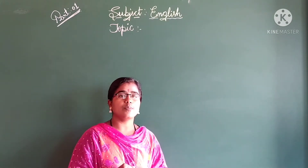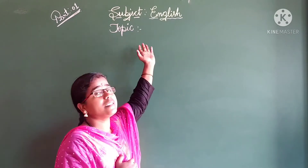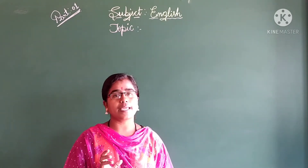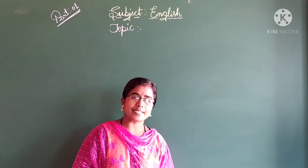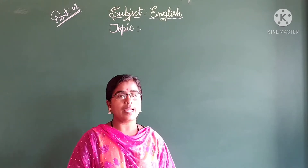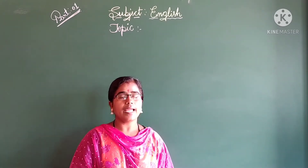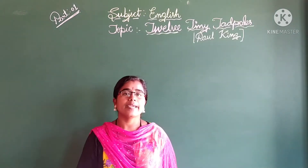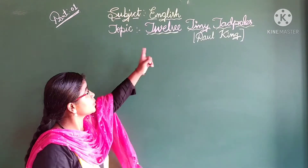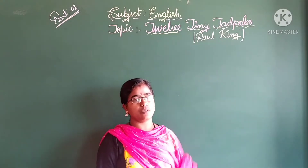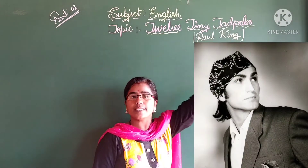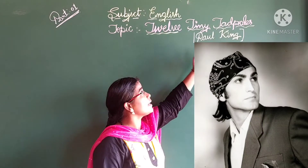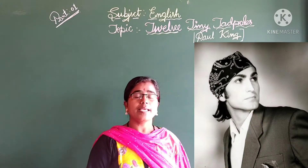That poem is in your textbook - it is called 'Twelve Tiny Tadpoles.' Let us learn today that poem and about the author. We will enjoy this poem. What is the poem name, children? Twelve Tiny Tadpoles. Do you know what a tadpole is? This poem is written by the poet Paul King.